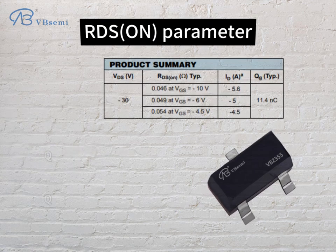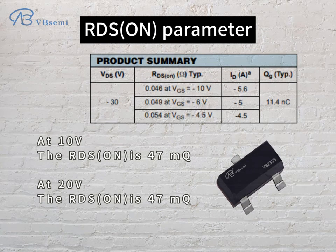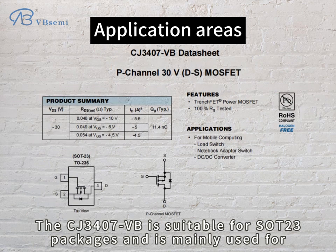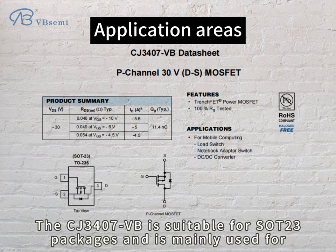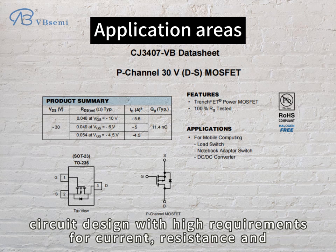RDS(on) parameters: at 10V, the RDS(on) is 47mΩ; at 20V, the RDS(on) is 47mΩ. The CJ3407VB is suitable for SOT-R3 packages and is mainly used for circuit design with high requirements for current, resistance, and voltage stability.